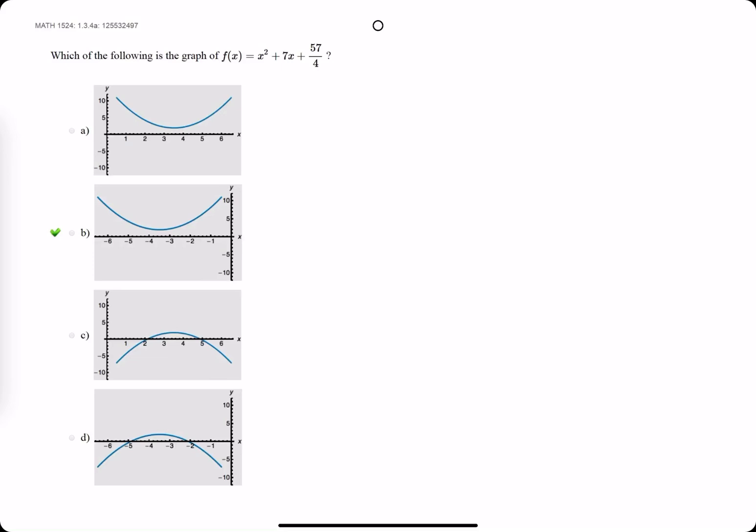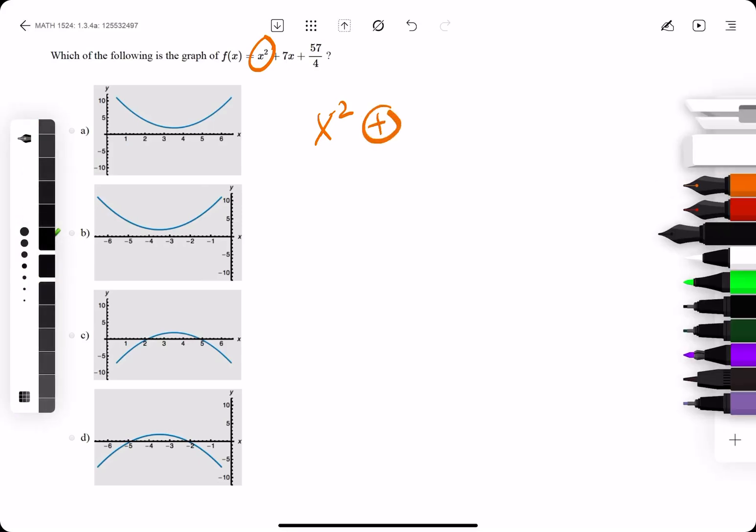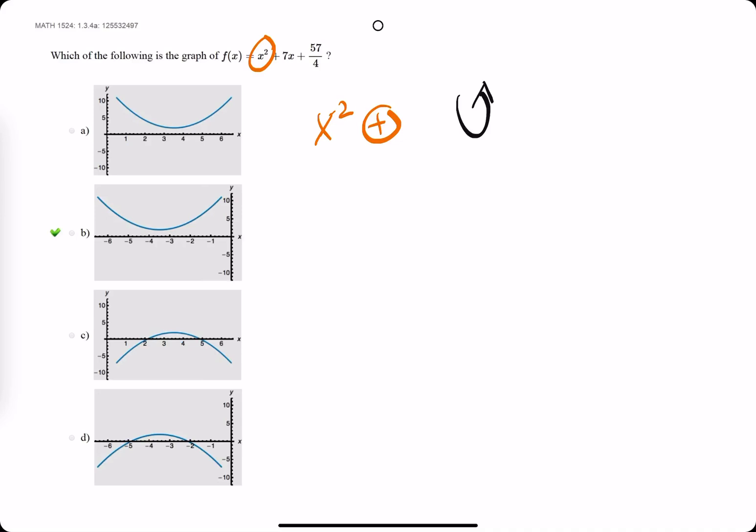First things first, we recognize that the x squared term is positive. When x squared is positive, we should have a function that is an upward facing U. So we're looking at either b or a, and we can eliminate options c or d.